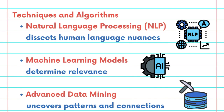Let's dive into semantic entity matching — the algorithms and techniques that make it possible. You can see a range of methods at work. Natural language processing algorithms dissect and interpret human language nuances. Machine learning models, especially those trained on large datasets of human interaction, predict and determine relevance. And advanced data mining techniques uncover hidden patterns and connections in large datasets. Each of these components works in harmony to decode the complex language of data.